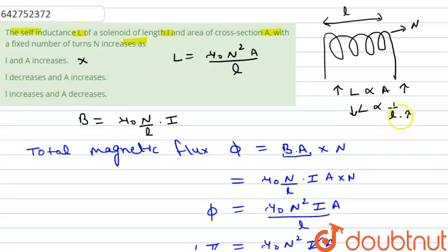And option B is L decreases and A increases. So if L decreases, that means L will increase. So it is correct that L decreases and inductance will increase. And A increases, so it is also correct that when A will increase, then inductance will also increase.